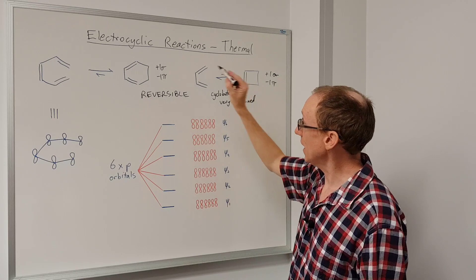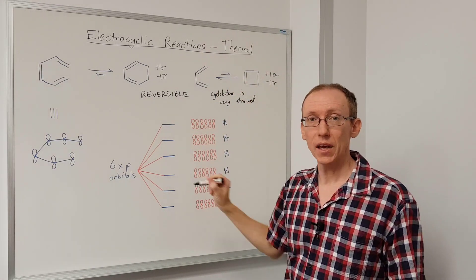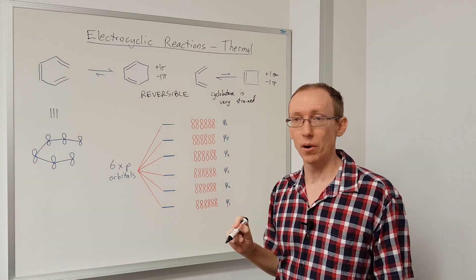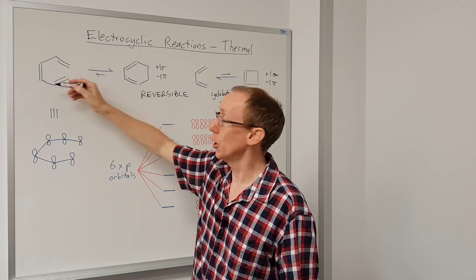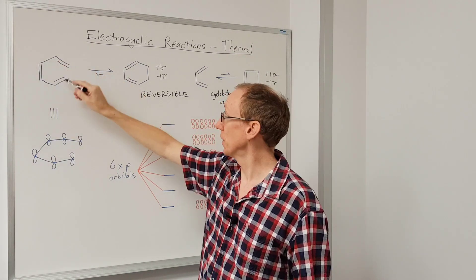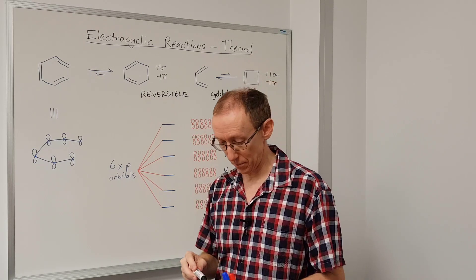So how do these reactions work? Well, the important thing to look at in these reactions is the HOMO of the open form, so the form before we form that extra sigma bond.